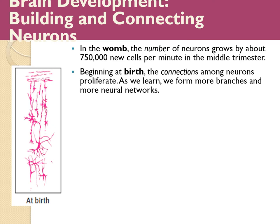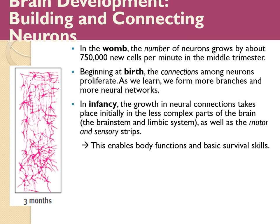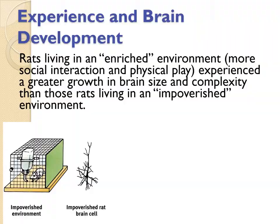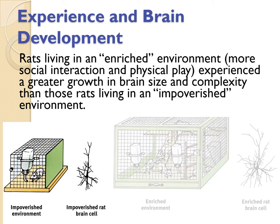Looking at brain development: neurons grow massively in the womb and continue rapidly after birth. At birth there are many neurons; by three months, there is exuberant growth — massive, fast neuron proliferation. By 15 months, the density continues to increase dramatically.